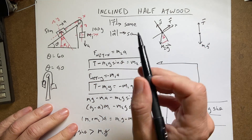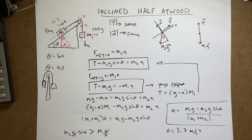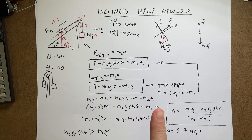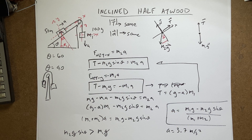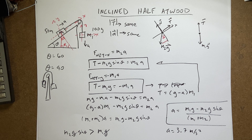That's the inclined half Atwood machine. I'm going to do more Atwood machine problems — we'll cover friction, a non-massless pulley, and possibly a non-massless rope. Talk to you guys later.